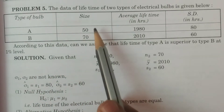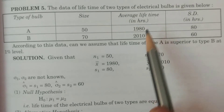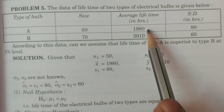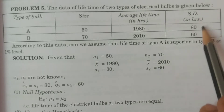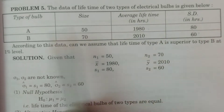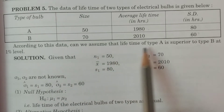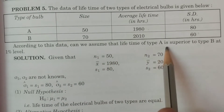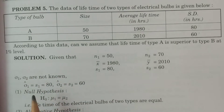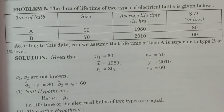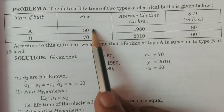The data: size 50 and 70, average lifetime in hours 1980 and 2010 hours, standard deviation in hours 80 and 60. According to this data, can we assume that the lifetime of type A is superior to type B at one percent level? This is a very simple question.